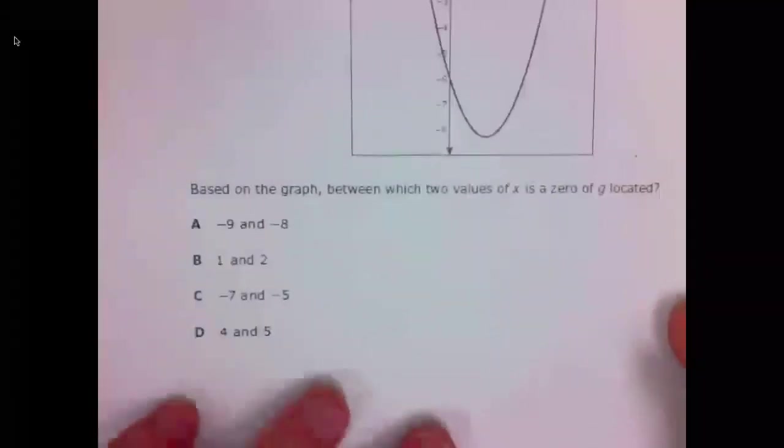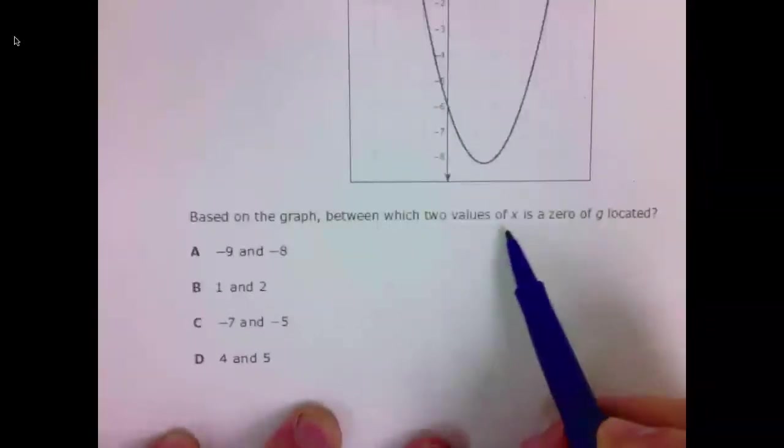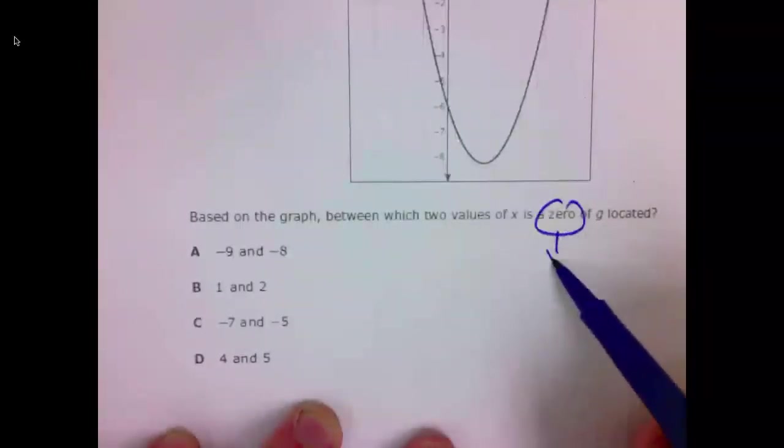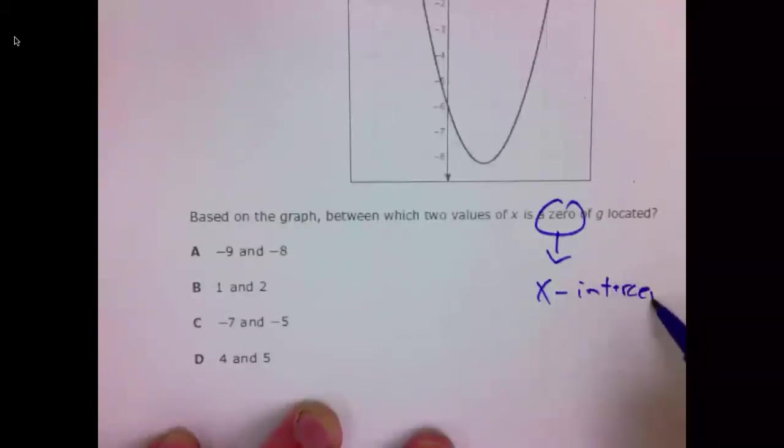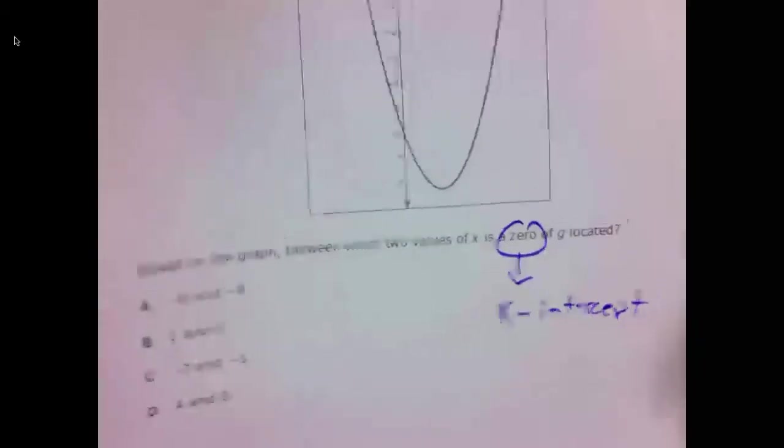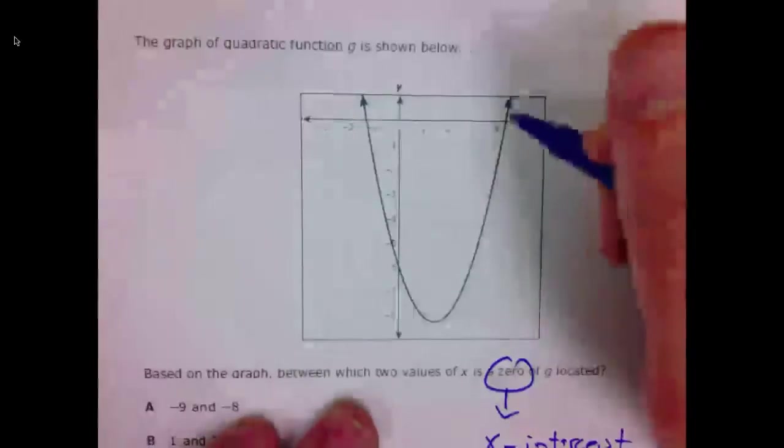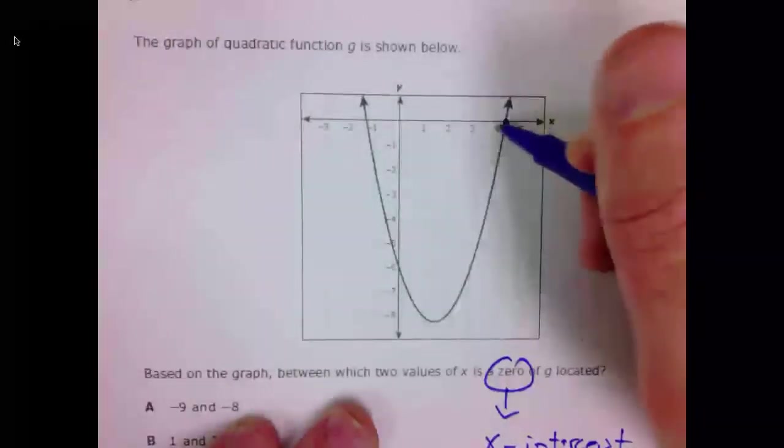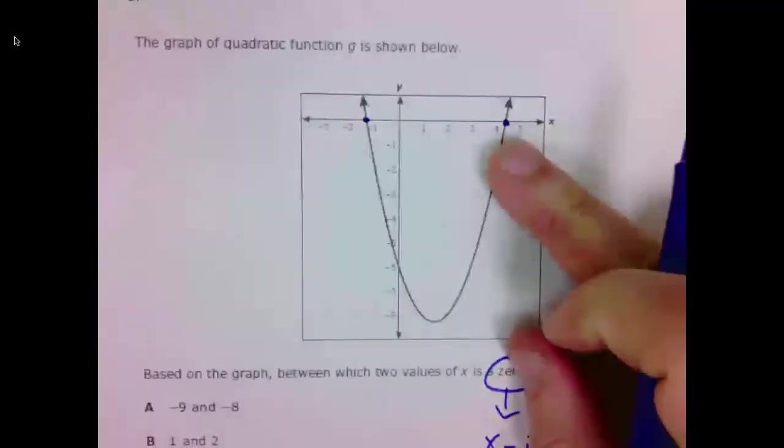Number three. It says, based on the graph between which two values of X is a zero located. Hopefully, you remember zero is an X-intercept. Specifically, it's the function value that maps to zero, but graphically, we can think of it as an X-intercept. Well, we have two X-intercepts on this quadratic. One is here between four and five. One is over here between negative one and negative two.